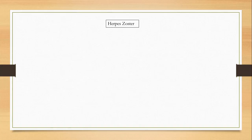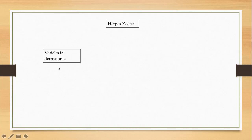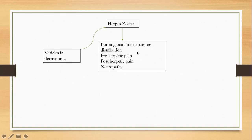The next category is dermatological causes of chest pain, and there is only one: herpes zoster, or shingles. Patients present with vesicles in a dermatomal distribution. If the dermatome happens to be on the left side of the chest, it causes chest pain. There is pre-herpetic pain, herpetic pain, and post-herpetic pain. This is a burning pain in the distribution of the dermatome, along with neuropathy.